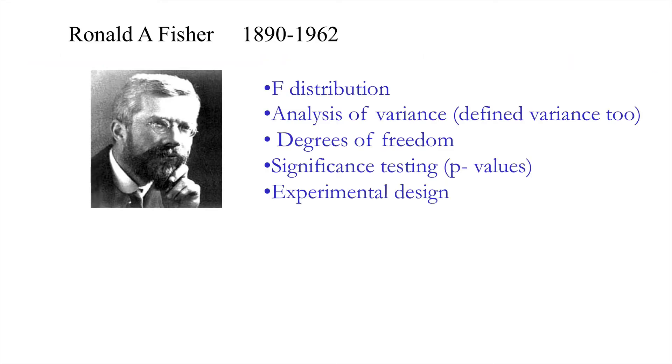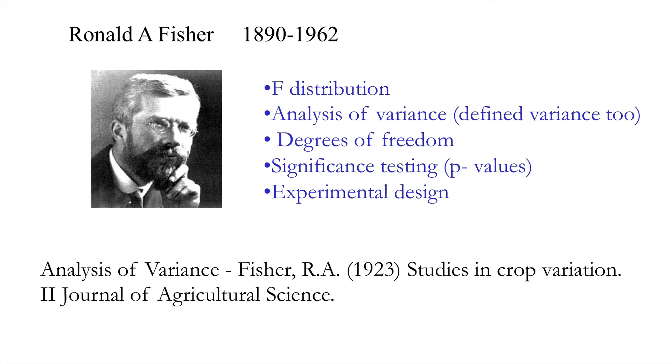I'll now move on to the second element of this introduction to analysis of variance and introduce Ronald Fisher, a really very important influence on modern statistics. He gave us the F distribution, named after him. He also gave us the analysis of variance, degrees of freedom, significance testing, and made many contributions to experimental design. You can actually read some of his early papers where he first introduced the concepts of analysis of variance and covariance in the 1920s when he worked at an agricultural research station called Rothamsted in the UK.